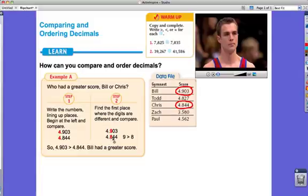So we'll take out the nine and eight, and as you can see here, nine is greater than eight. So that makes Bill's score of four and nine hundred three thousandths greater than Chris's score of four and eight hundred forty-four thousandths. Well, that's our lesson for today.